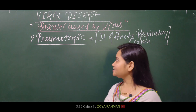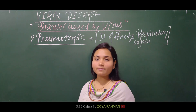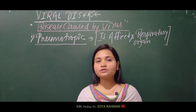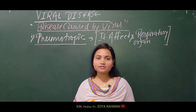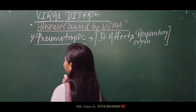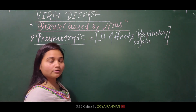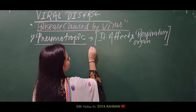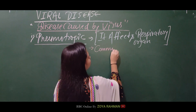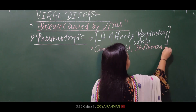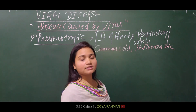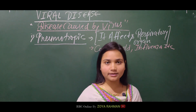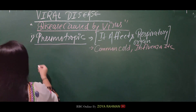Pneumotropic viral disease means it creates respiratory-related problems. The virus attacks the respiratory organs. We will study the examples, pathogens, and diseases in each of these categories.